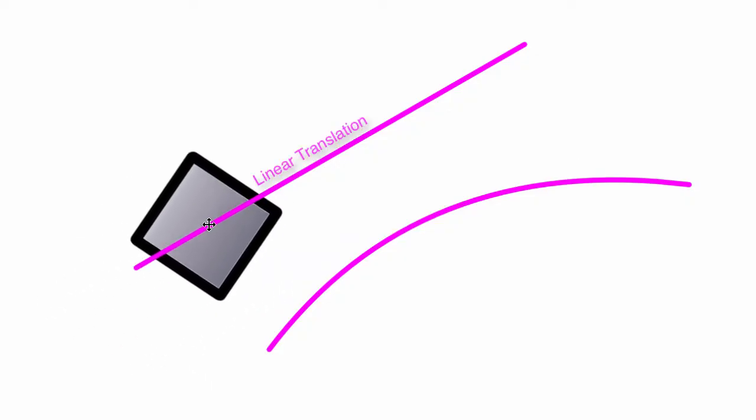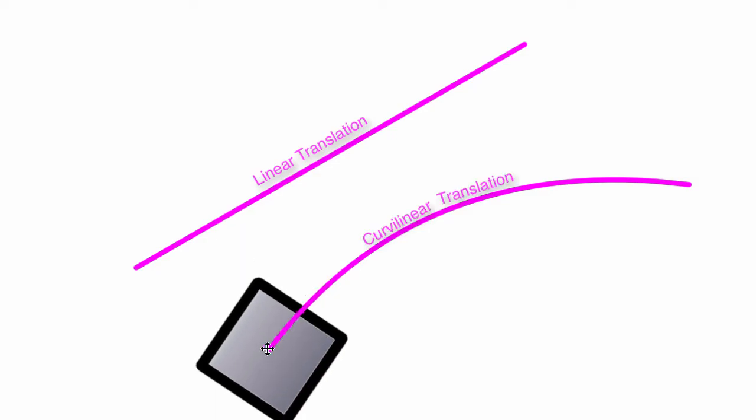Specifically talking about translation, if we have our object moving in a straight path without actually rotating about any point, this is called linear translation. If it's moving along a curved path and also not rotating, that would be considered curvilinear translation.